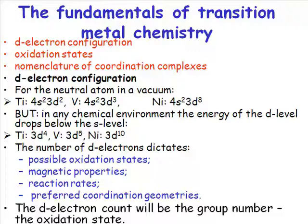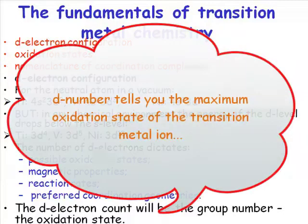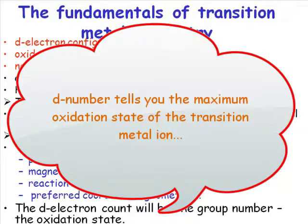ever have the oxidation state higher than the group number. So, this group number, which is telling you how many d-electrons you've got in your atom, is also telling you what the maximum oxidation state is. You can have any oxidation state up to the maximum oxidation state, but you cannot have an oxidation state higher than the maximum oxidation state.